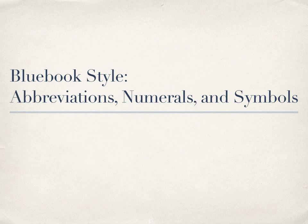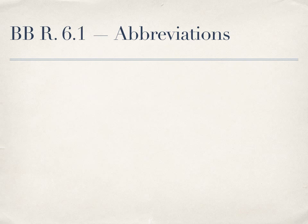Next, let's take a look at Blue Book Rule 6, which provides guidance on formatting abbreviations, numerals, and symbols. The Blue Book contains specific abbreviations you should be using in your citations in tables T6 through T16. If the abbreviation you want to use isn't listed in one of those tables, you probably shouldn't be using it.